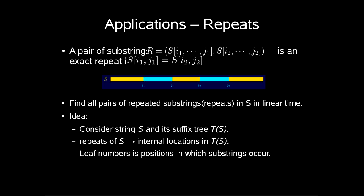Another example could be to find repeats in a string. So we want to find recurrences of a substring r, which consists of two substrings: s from i1 to j1, and another s from i2 to j2. Of course, these two must be equal to each other. The idea of finding exact repeats would be to find all pairs of repeated substrings in our string s in linear time.